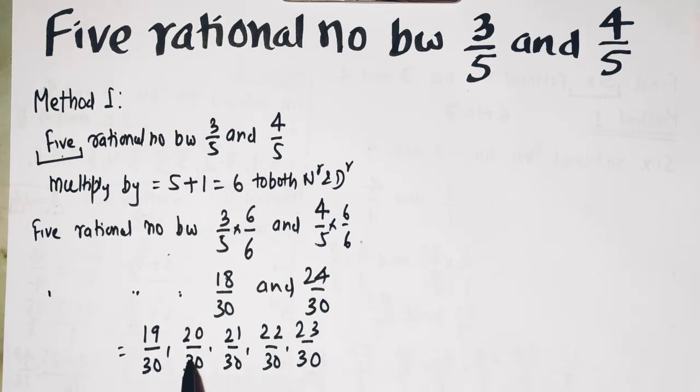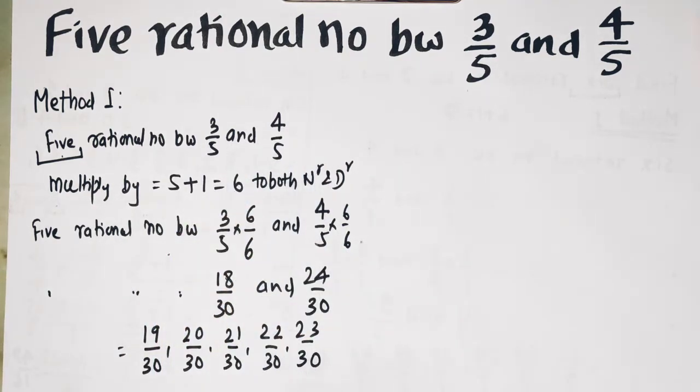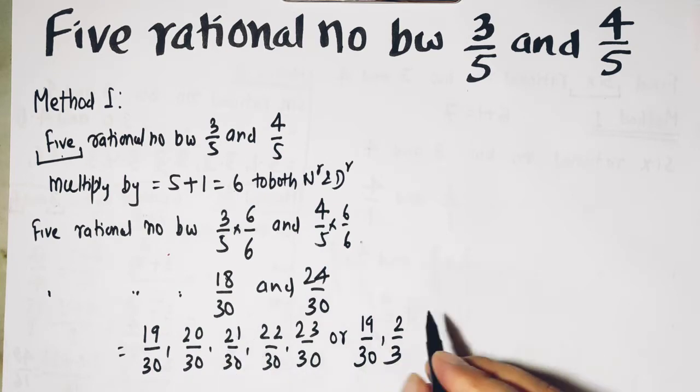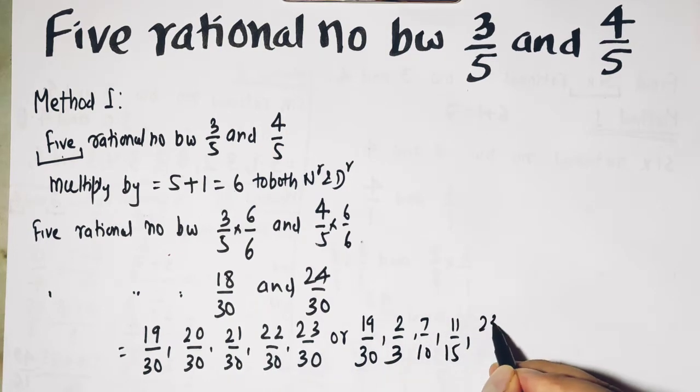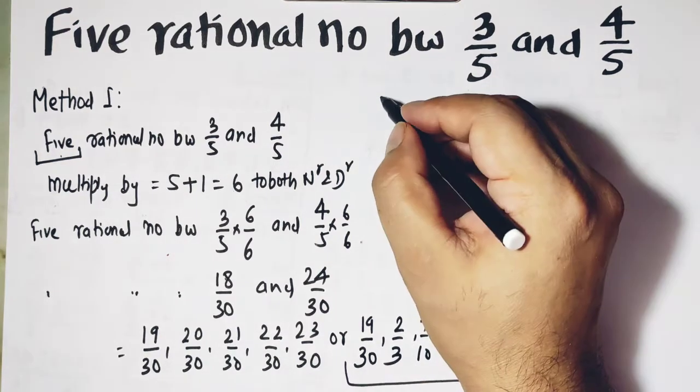So we have to find 5 rational numbers between 18 upon 30 and 24 upon 30. That gives us 19 upon 30, 20 upon 30, 21 upon 30, 22 upon 30, and 23 upon 30. We have got 5 rational numbers between these two numbers. This is our answer. We can simplify this: 19 upon 30, we can simplify 20 upon 30 to 2 upon 3, we can cancel 21 upon 30 by 3 to get 7 upon 10, 22 upon 30 becomes 11 upon 15, and 23 upon 30. This is our answer and this is correct.